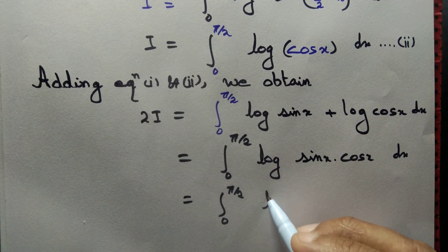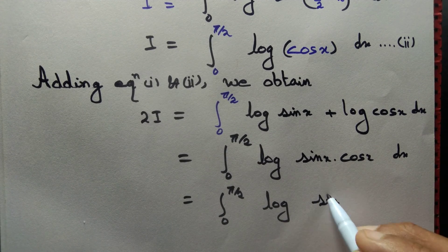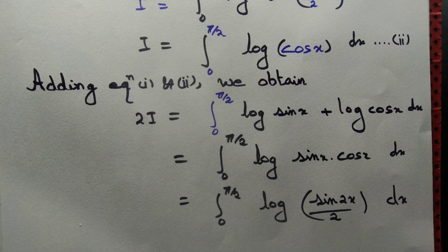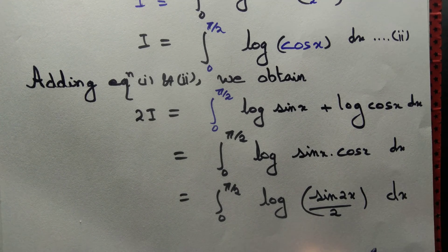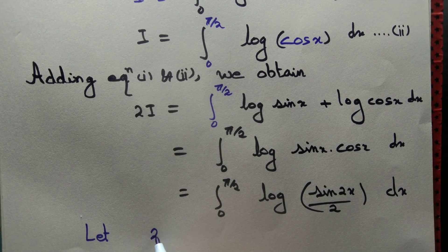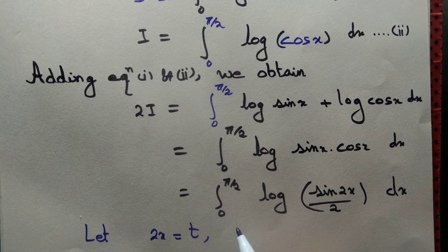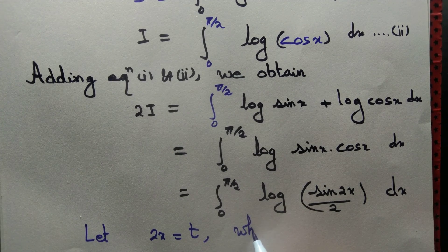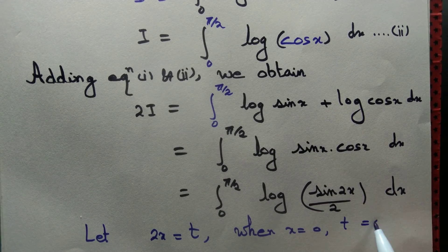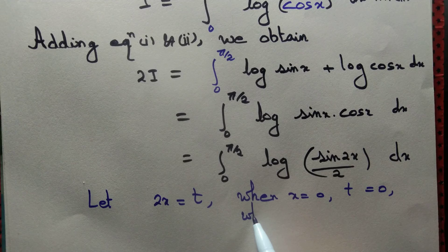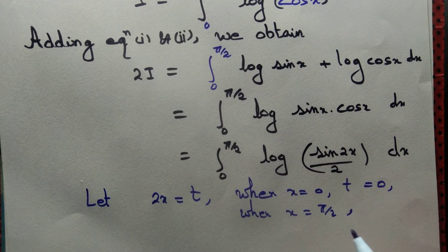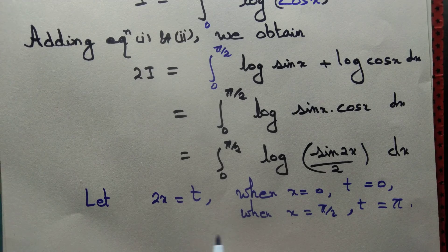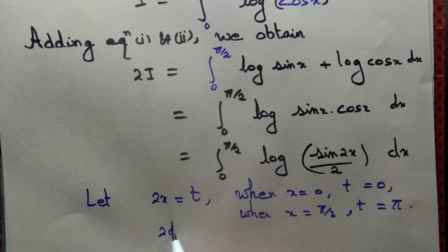The product sin x · cos x can be written as sin(2x)/2. We apply the substitution: let 2x = t. When x = 0, t = 0; when x = π/2, t = π, since t is double x. Differentiating gives 2 dx = dt. So as x changes from 0 to π/2, t changes from 0 to π.